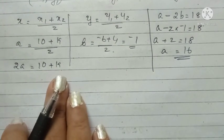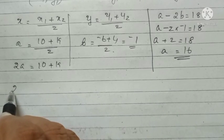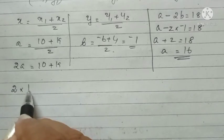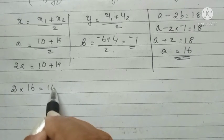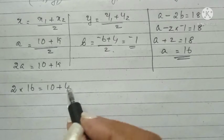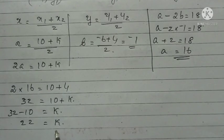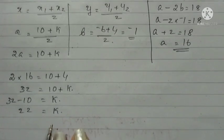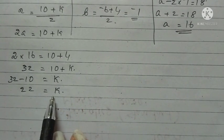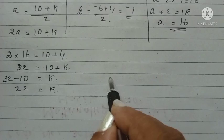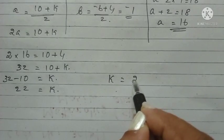That value we are substituting. 2a equal to 10 plus k. 2 into a is 16 equal to 10 plus k. Now, we are solving. By solving the equation, we got 22 is equal to k. Therefore, the value of k is equal to 22.